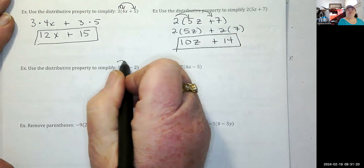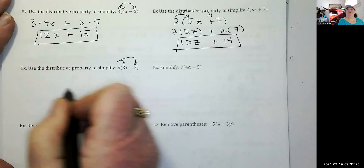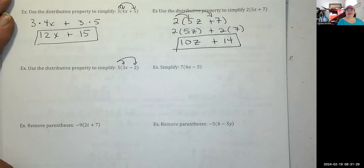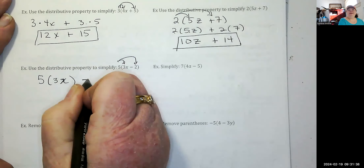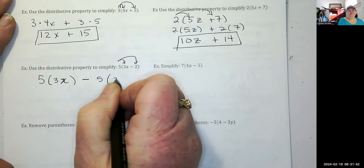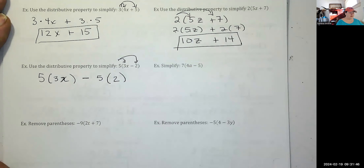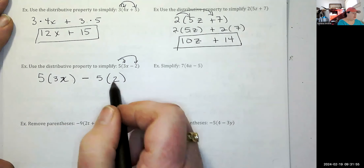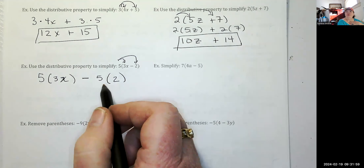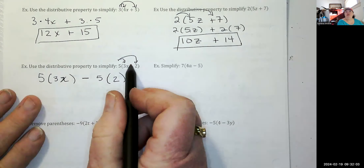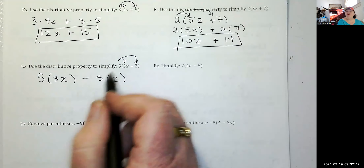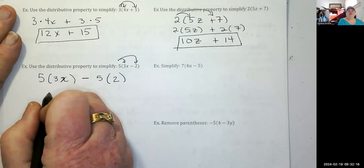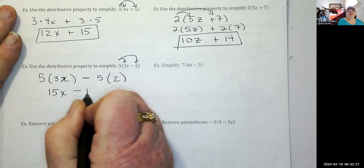Five times the quantity 3x minus 2. Five times 3x minus five times 2: five times three is 15x, the sign in the middle is minus, so minus five times two is 10. If you just bring the sign down, it works every time. The answer is 15x minus 10.